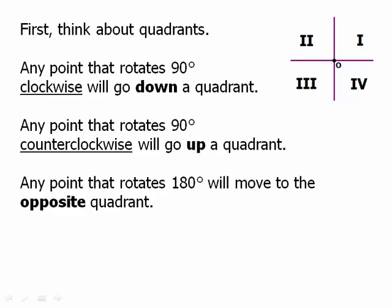Any point that rotates 180 degrees will move to the opposite quadrant. So it will swap back and forth between 1 and 3 or swap back and forth between 2 and 4.